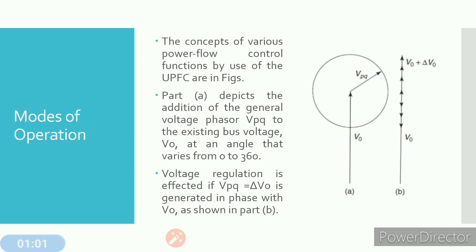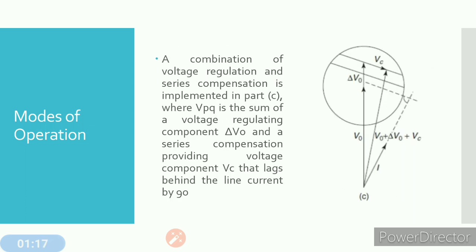Voltage regulation is achieved when Vpq equals delta-V0, generated in phase with V0, so by injecting this voltage we can change the magnitude of V0. In Figure C, a combination of voltage regulation and series compensation is implemented. Vpq is the sum of the voltage regulating component delta-V0 and a series compensation voltage component Vc that lags behind the line current by 90 degrees. By doing this, we can control both voltage regulation and series compensation.